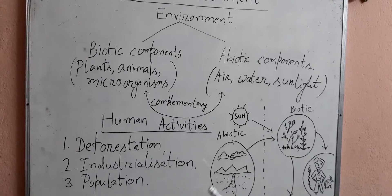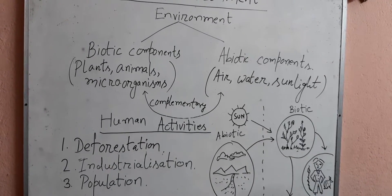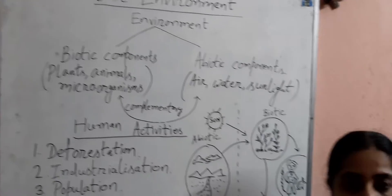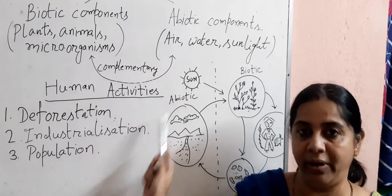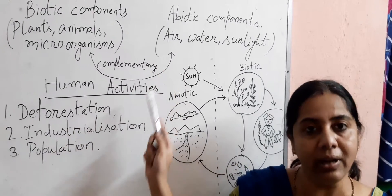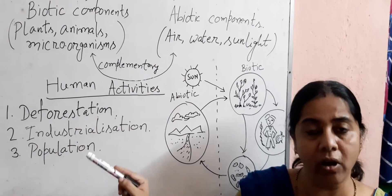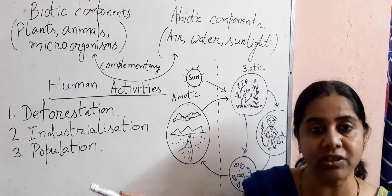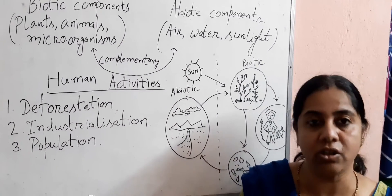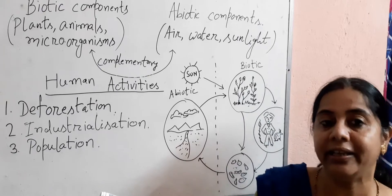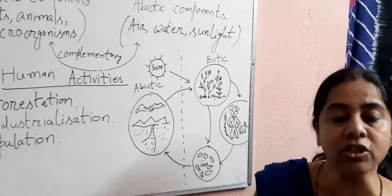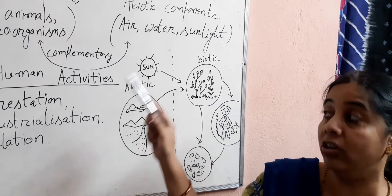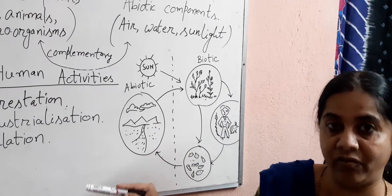Sun is the most important factor in this whole environment, because the heat and light of the sun is necessary for the existence of life on this earth's surface.